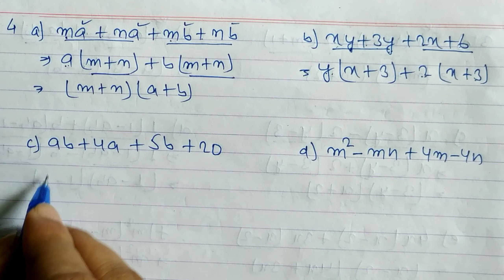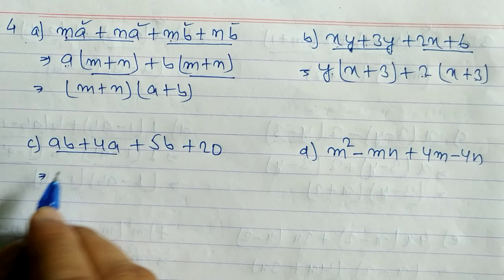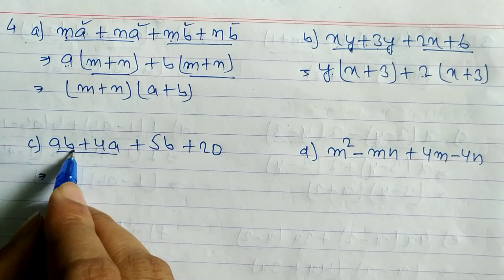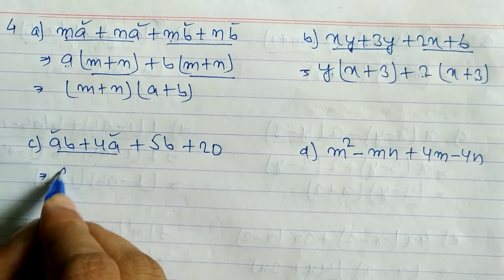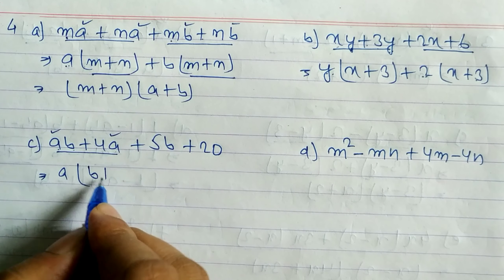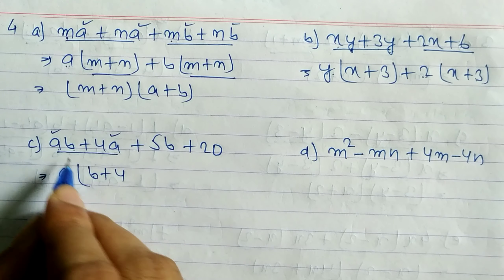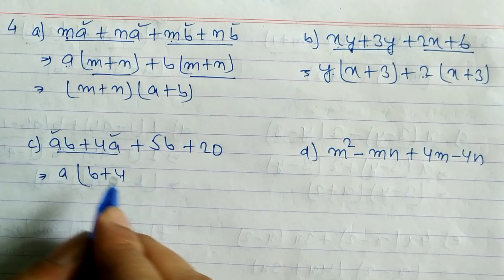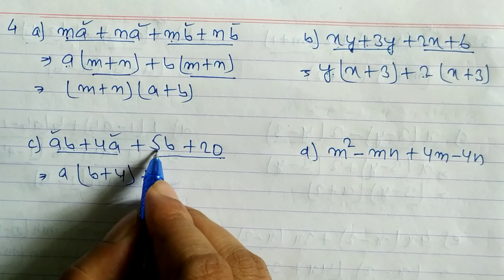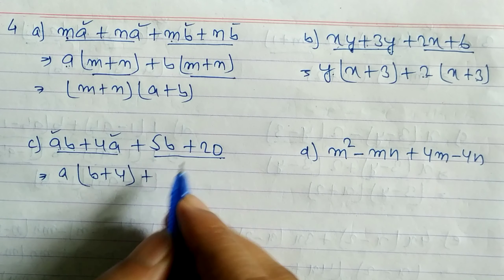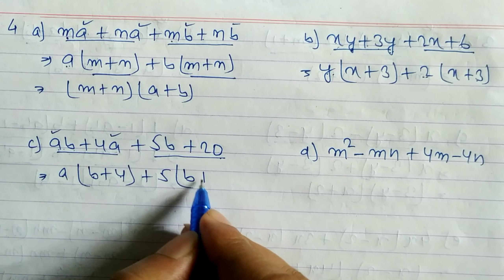Now look at question 4c. From ab and 4a, we can take a as common, remaining b plus 4. From 5b and 25, we can take 5 as common, remaining b plus 5. So the answer involves a(b plus 4) plus 5(b plus 5).